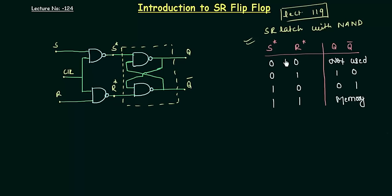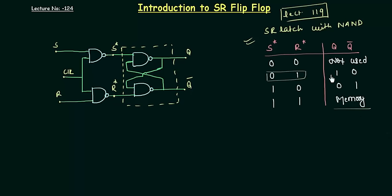When S* and R* are both 0, Q and Q complement cannot be determined — it is a contradictory case, so we don't use this condition. When S* R* is 0,1 or 1,0 we get Q values of 1,0 and 0,1 respectively. When S* and R* are both 1, it is memory — whatever the previous value was is stored again. The memory means whatever the previous state was is retained when S* and R* are 1.